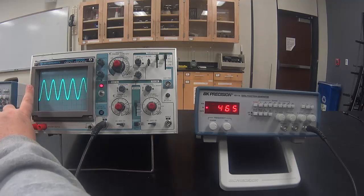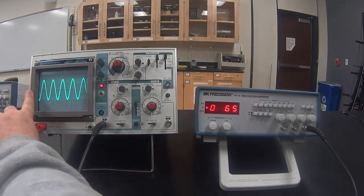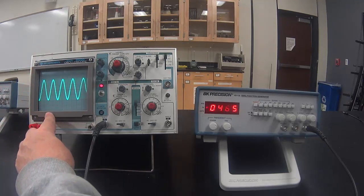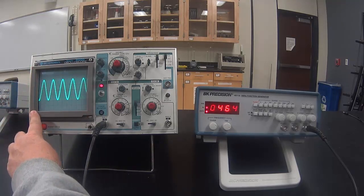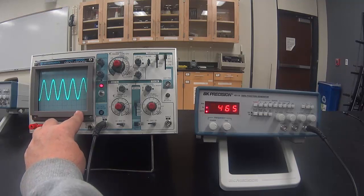The oscilloscope is like a graph. The vertical axis is the voltage and the horizontal axis is the time.